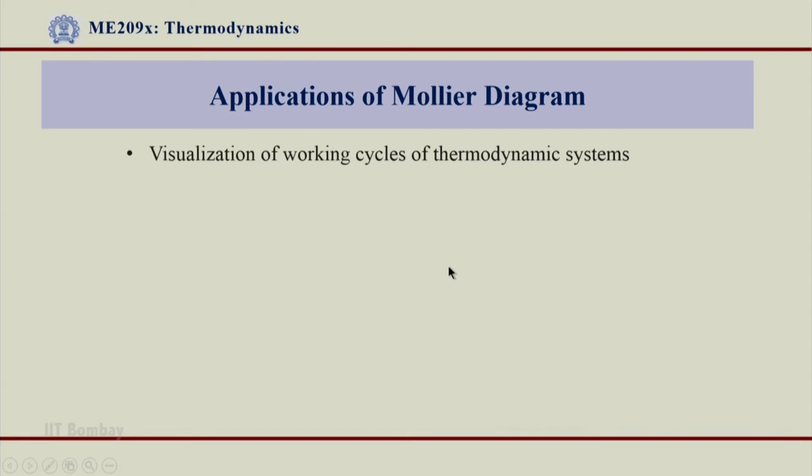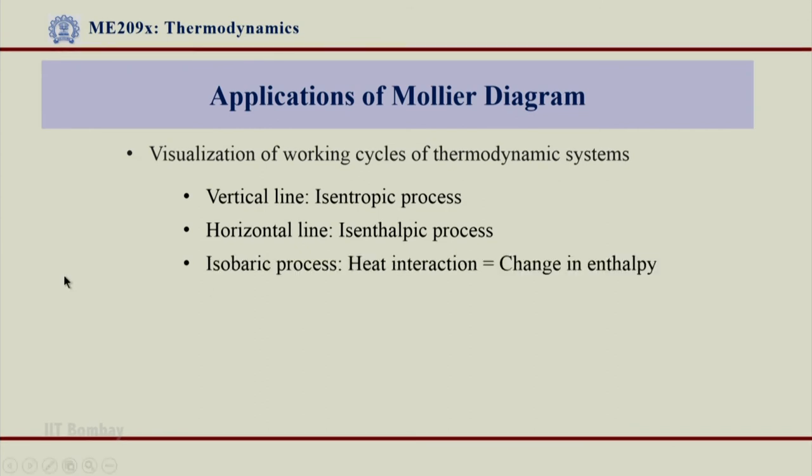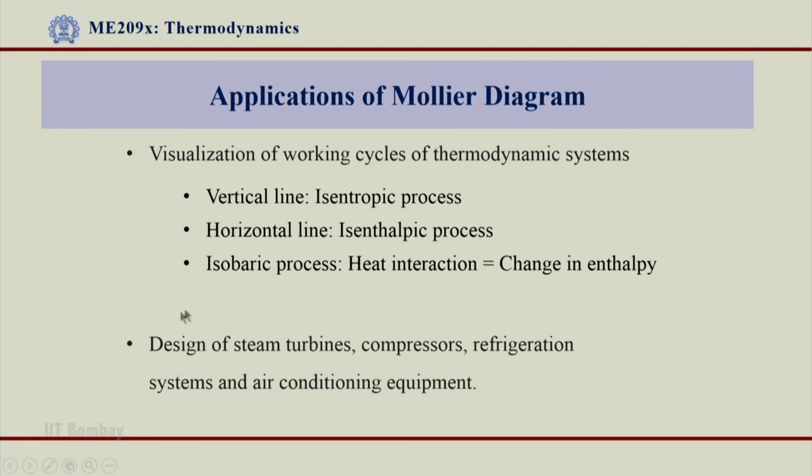Various applications of Mollier diagram: visualization of working cycles of thermodynamic systems. The vertical lines are isentropic processes, the horizontal lines are isenthalpic processes. As soon as you see a cycle with vertical or horizontal lines, one can understand the isentropic and isenthalpic processes. The isobaric process, constant pressure processes where the heat interaction q equals delta h. One can use this information for design of steam turbines, compressors, refrigeration systems and air conditioning equipment.